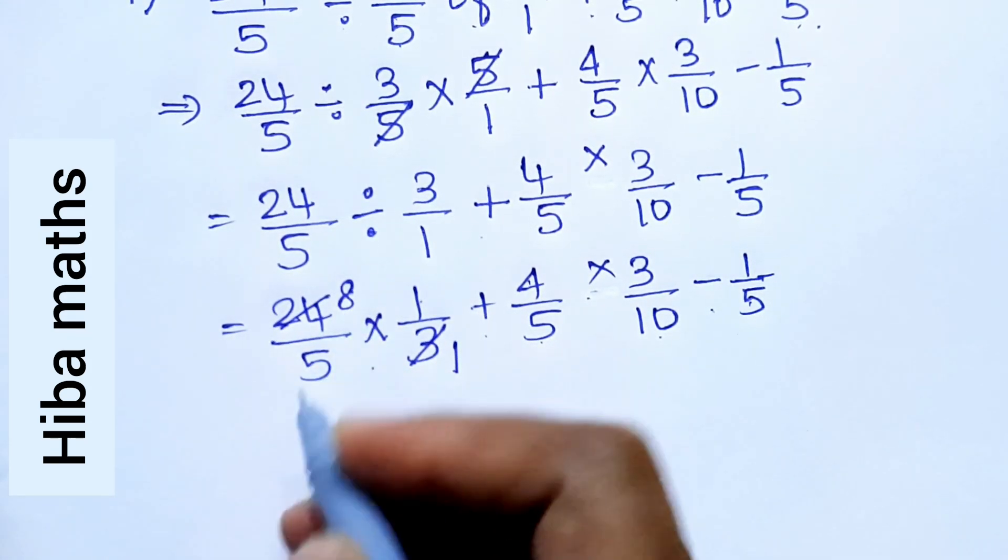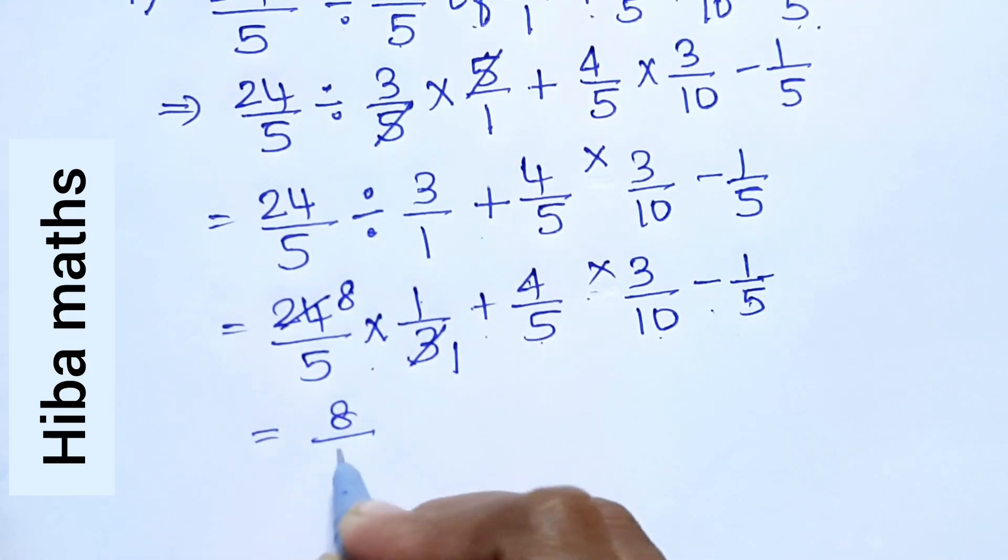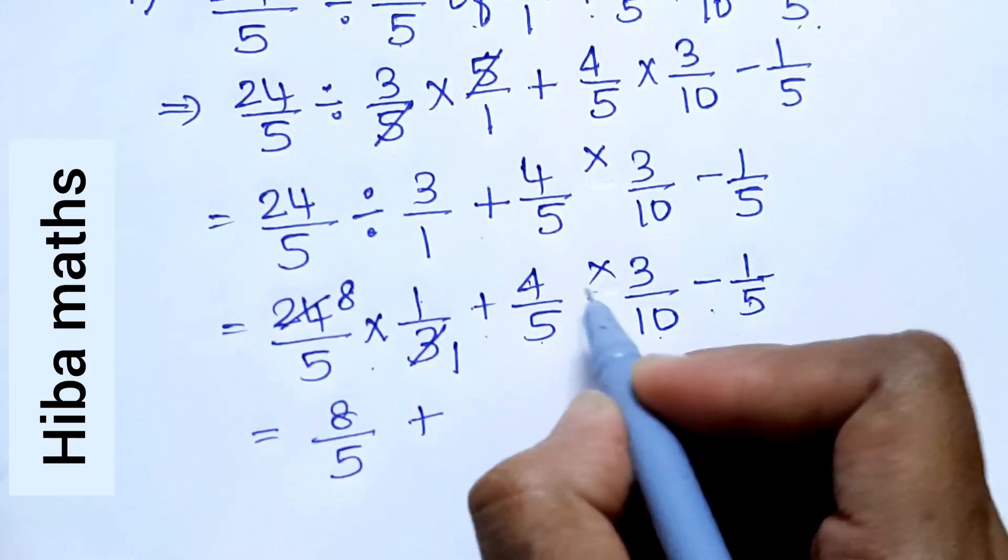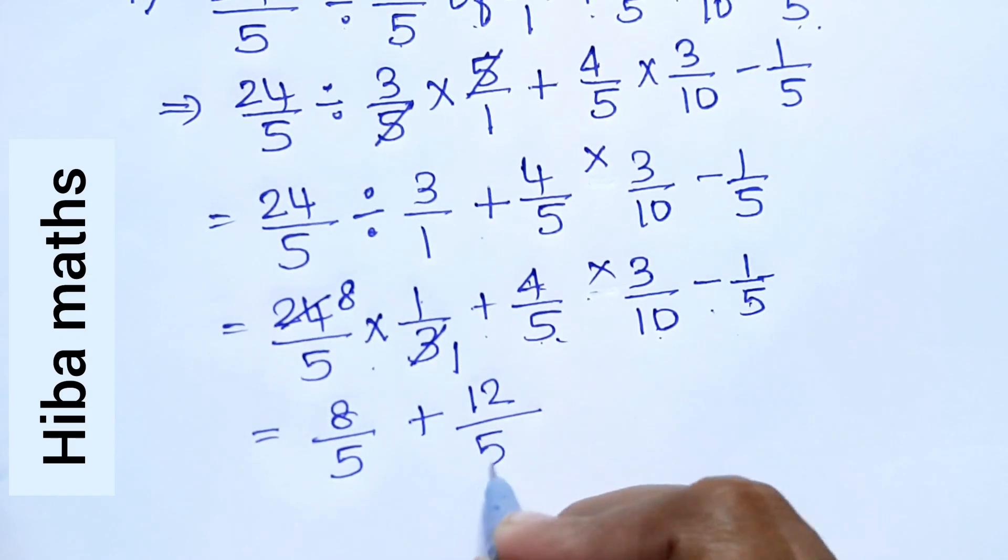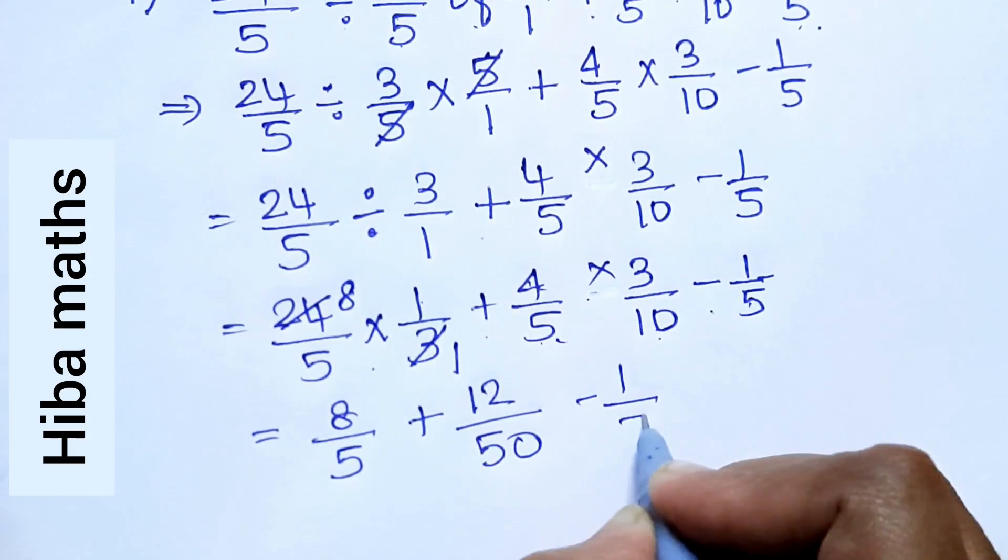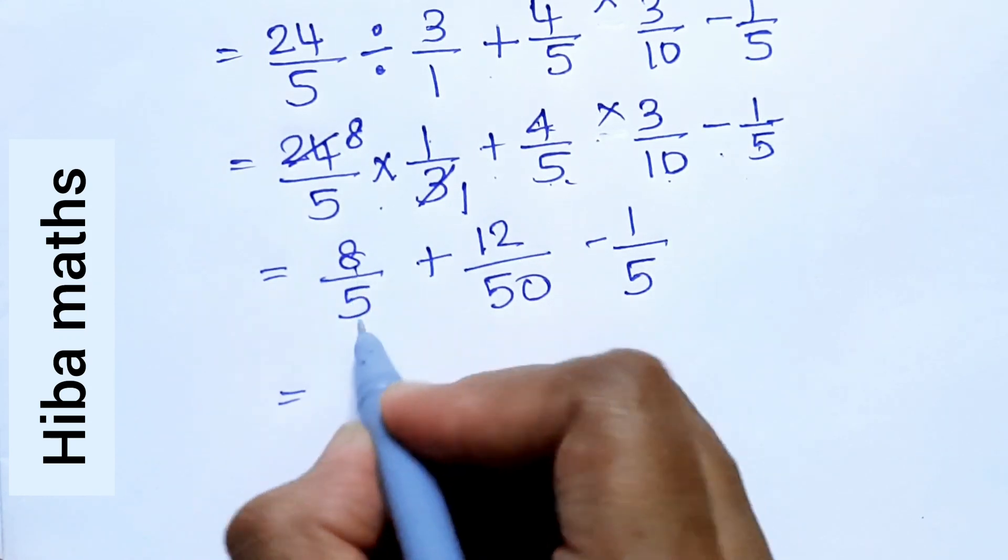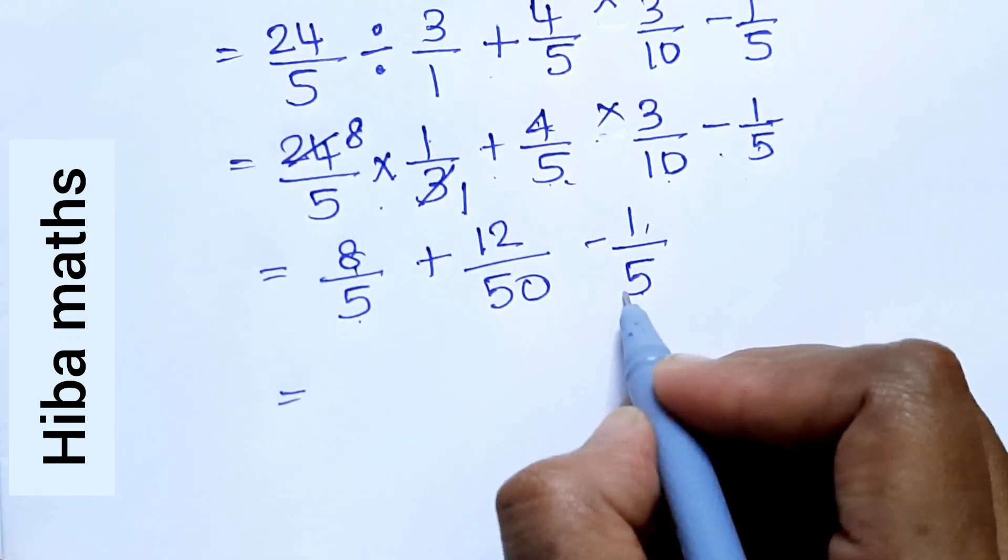Next line: 3 by 1 times 3 is 8 times. So, 8 by 5 plus 4 times 3 is 12 divided by 5 times 10 is 50 minus 1 by 5. Next line: 8 by 5, 1 by 5, same denominator.